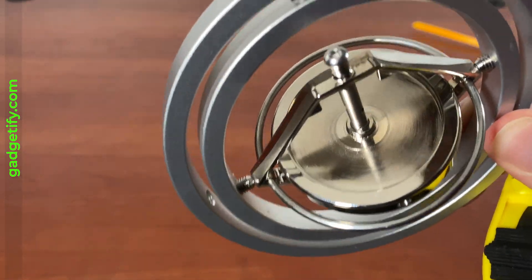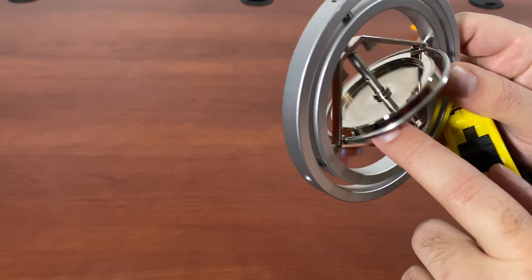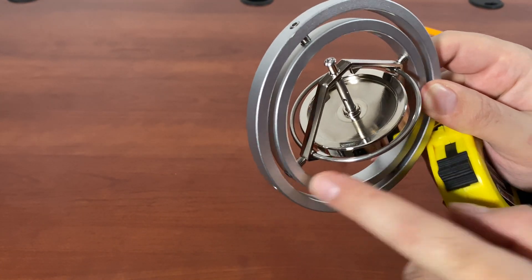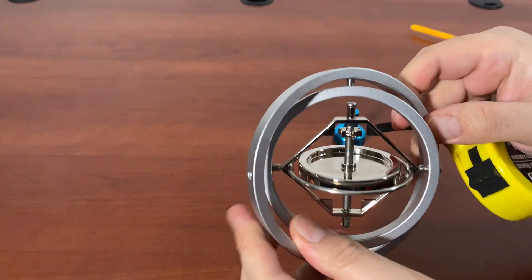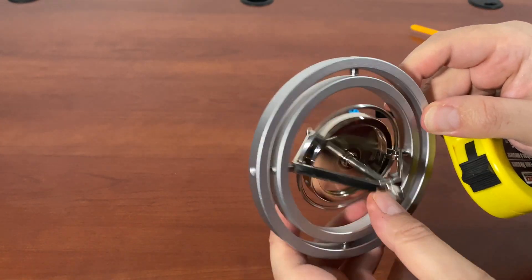This is sort of like a mini gyroscope, a metal one. You have these screws that are tightened to hold it, so you have that effect that it's suspended in the middle of these rings.